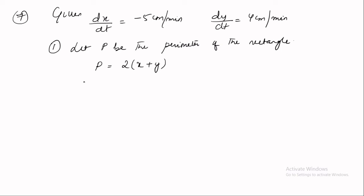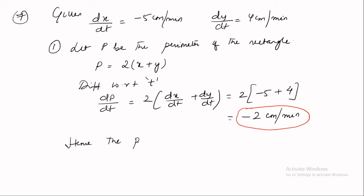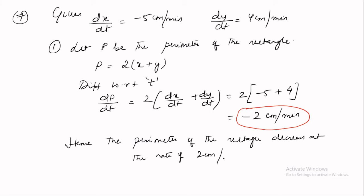Differentiating with respect to time: dP/dt = 2(dx/dt + dy/dt) = 2(−5 + 4) = −2 cm per minute. The answer is negative, and negative means decreasing. Hence the perimeter of the rectangle decreases at the rate of 2 cm per minute.